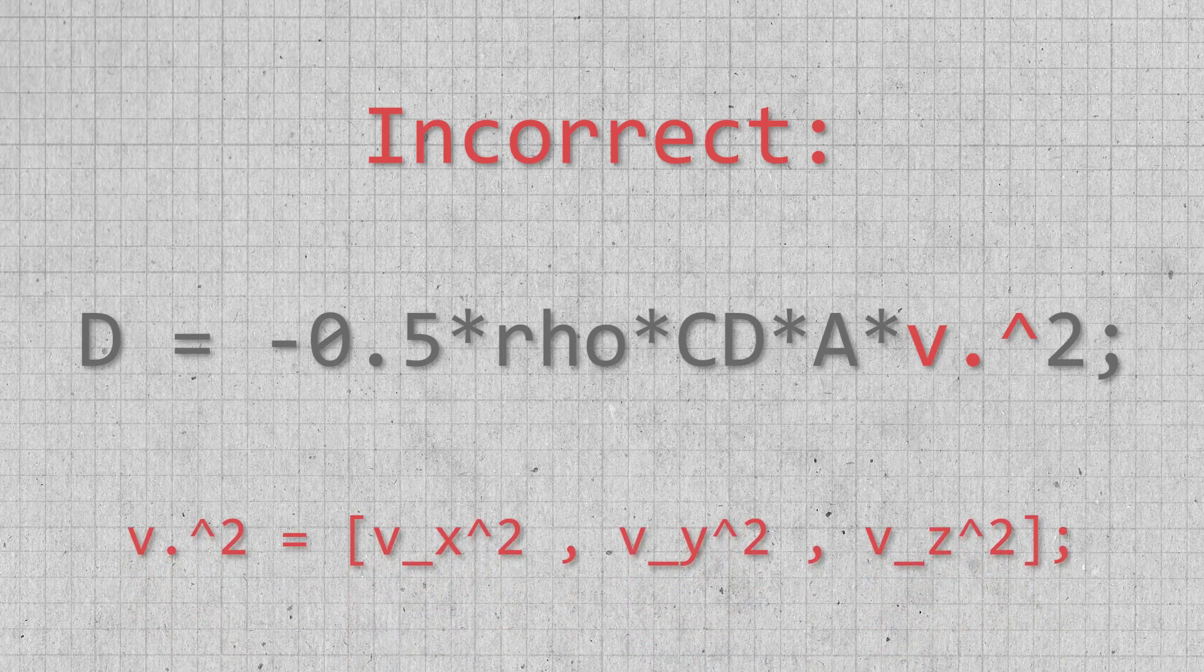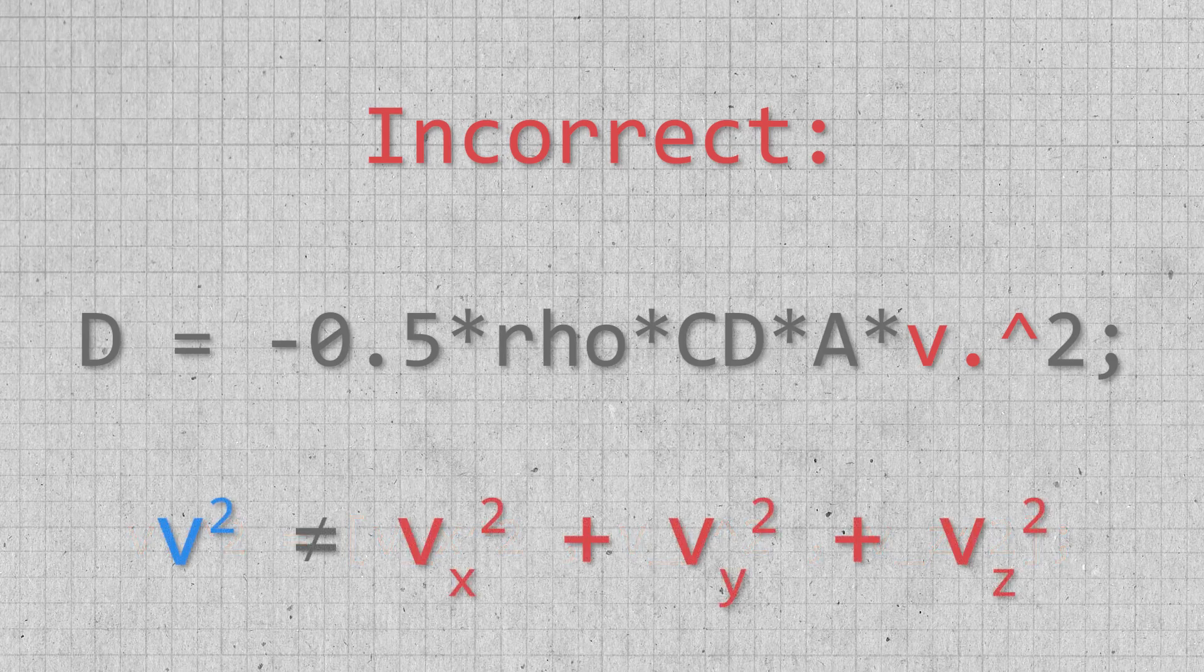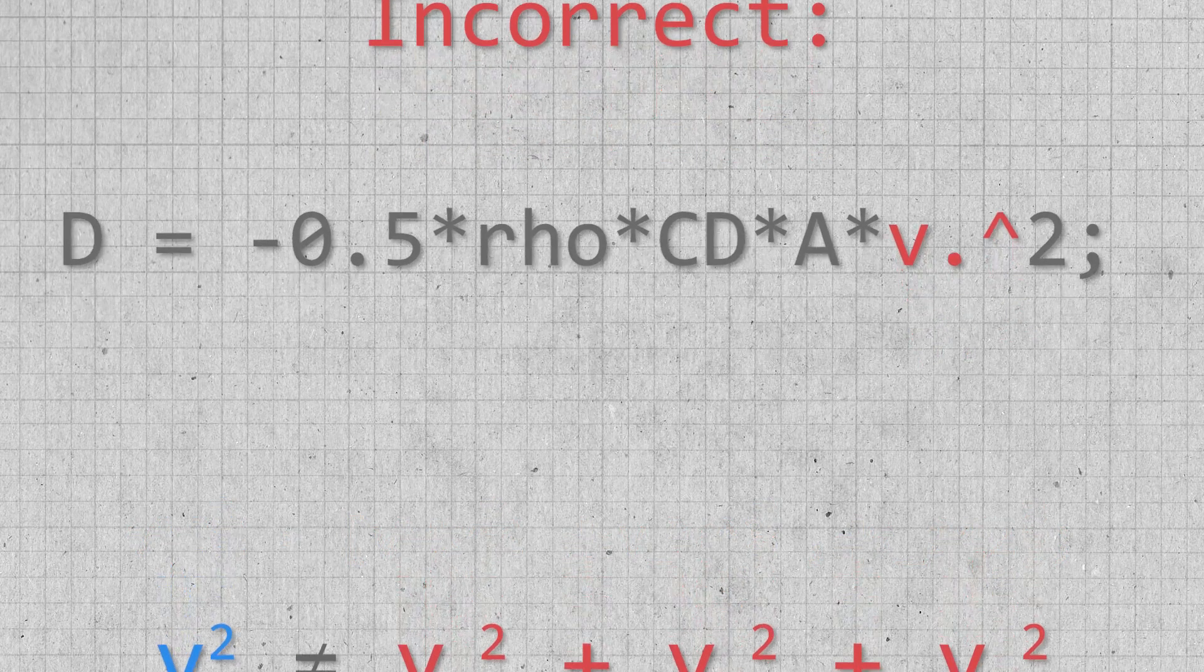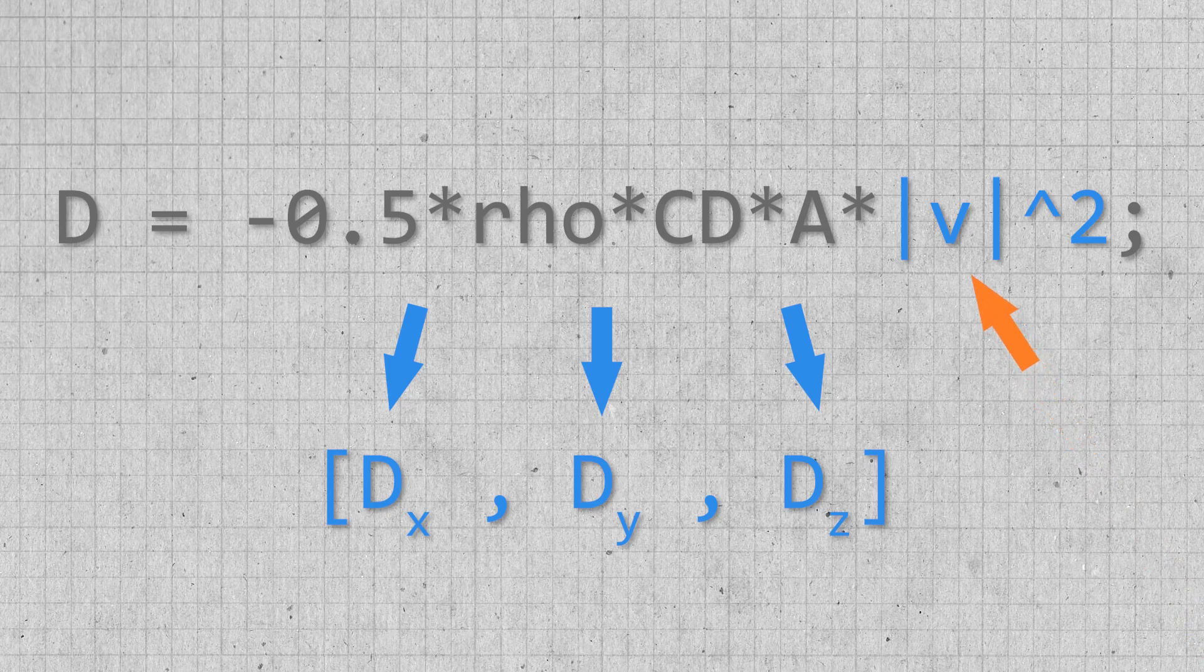So this looks just like the drag equation and seems fine at first glance, but it's reintroducing that error that we were just talking about. What the students were trying to do was skip the step of calculating the magnitude of the drag and then breaking it into its components. They were trying to use the vector form of velocity to get a drag vector out all in one line.